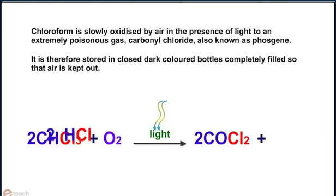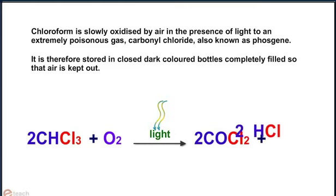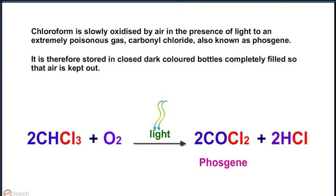The reaction taking place is: 2CHCl3 + O2, in the presence of light, gives 2COCl2, i.e., phosgene, plus 2HCl.